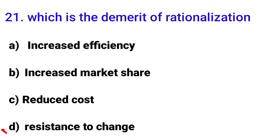The demerit is option D: resistance to change. Rationalization involves many changes — technology changes, employee role changes — and employees often resist such changes. That resistance to change is a disadvantage of rationalization.